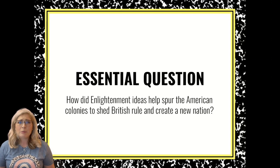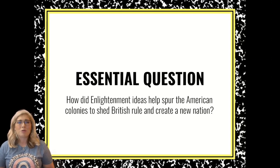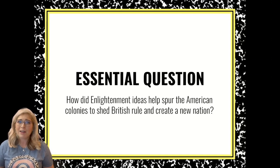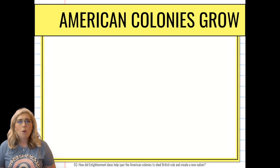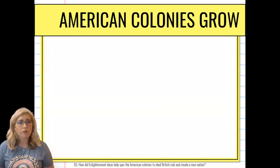Now some of this might be a review for you because we live in the United States. You might have learned about this before, maybe in the seventh or eighth grade. But it's been quite some time, so let's have a little bit of a recap. We're going to go through and talk about some of the things that caused the revolution, a few quick details about the revolution, and then what happens afterwards.